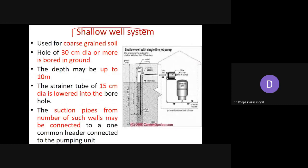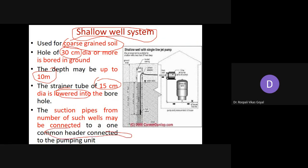Next is the shallow well system. Similar to the deep well, wells are constructed at shallow depth. It is used for coarse-grained soil. A hole of 30 centimeter diameter or more is bored in the ground to a depth of up to 10 meters. A strainer tube of 15 centimeter diameter is lowered into the bore hole. Suction pipes from a number of such wells are connected to one common header pipe connected with the pumping unit.